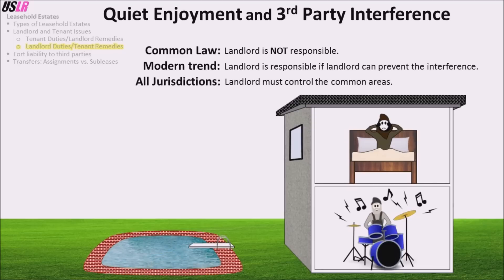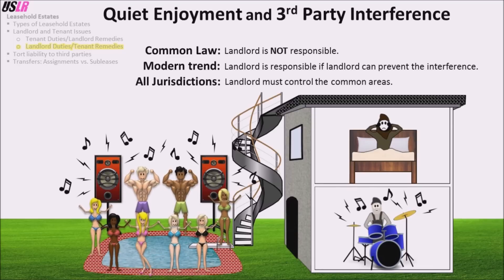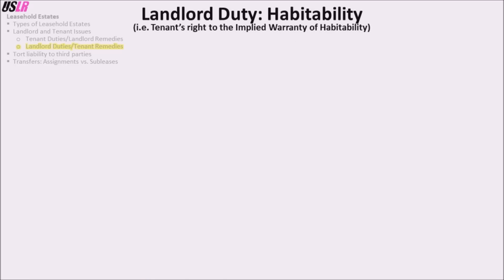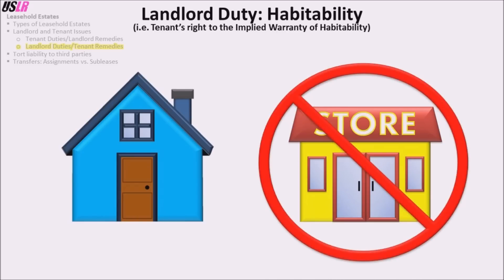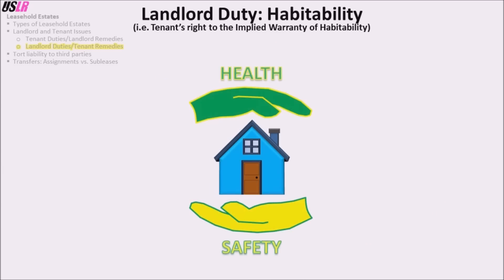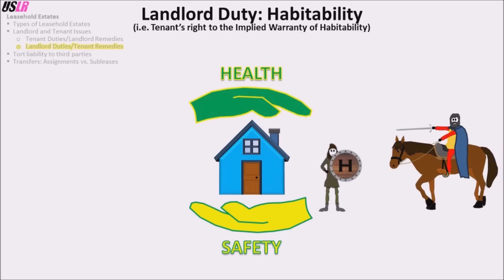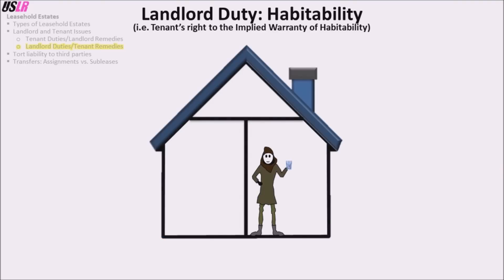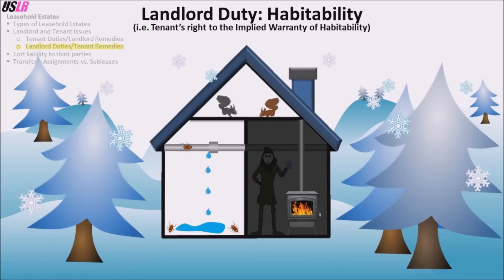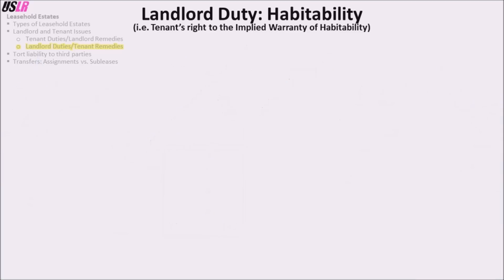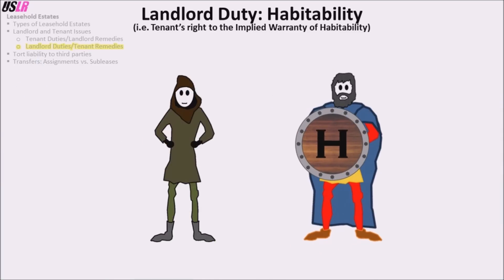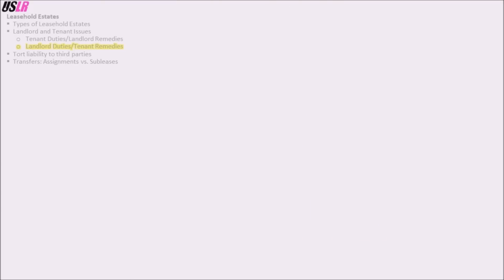All jurisdictions require that the landlord must control the common areas, for example hallways or staircases. The implied warranty of habitability requires that the property is suitable for living; thus it does not apply to commercial leases. Whether a property is suitable for living is an issue of health and safety. To show a breach of the implied warranty of habitability, the tenant must show a substantial threat to health or safety. Examples include water issues (running water, drinkable water, hot water), plumbing issues, electrical issues, heat during the winter, and insects or rodents. It is worthwhile to review the implied covenant of quiet enjoyment before moving forward.